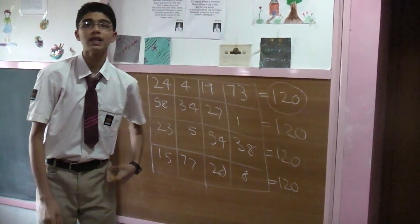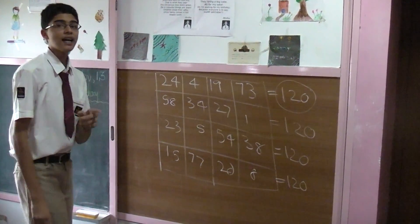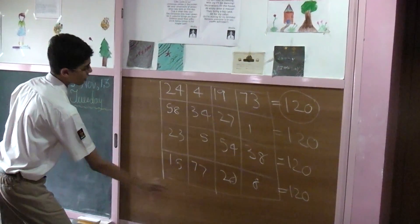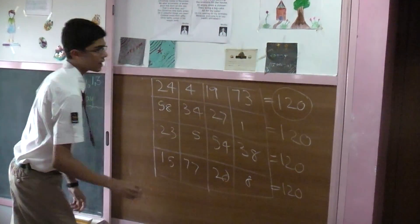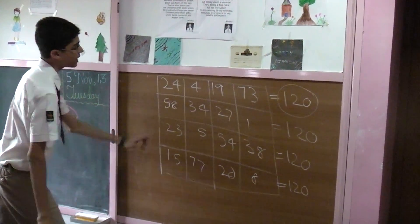Sachin Tendulkar has many records to his name and one of those records is the highest number of centuries in test cricket. You add these columns, you still get 120. Let's just check it out. 24 plus 58 is 62,